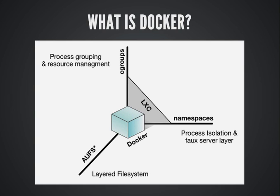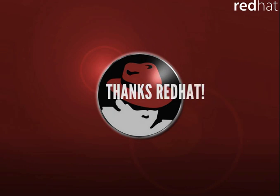Docker sits in the middle and drives LXC, with three orthogonal areas of concern: AUFS is responsible for the file system; cgroups are responsible for taking processes running in your container, grouping them, managing their resources, and doing accounting; and namespaces are responsible for making your process feel like it's in its own unique little environment — creating a sort of faux server layer.